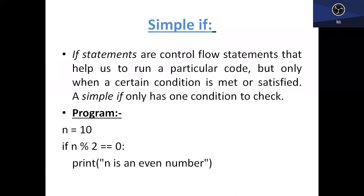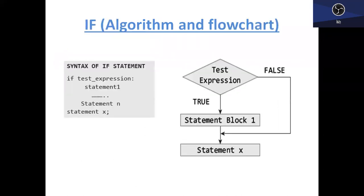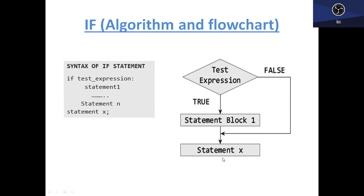Likewise you can write a simple if statement. For the flowchart and algorithm of a simple if statement: write your condition inside the if, then write a colon, then write your statement inside the if block. Any statement written outside the if block — call it statement X — is independent. In the flowchart, use a diamond symbol to write your condition, check whether it is true or false. If true, it executes statement block one; if false, it executes statement X. Statement X executes at the end whether the condition is true or false.